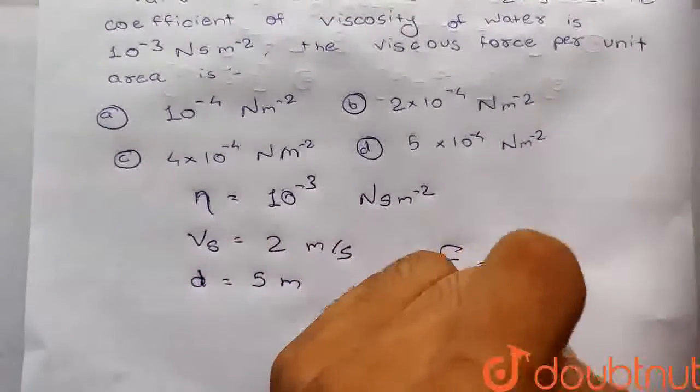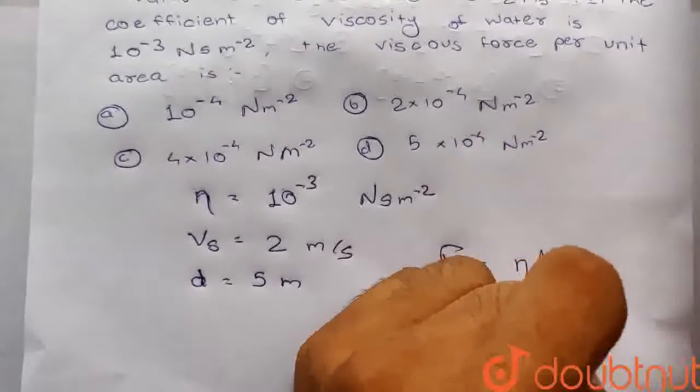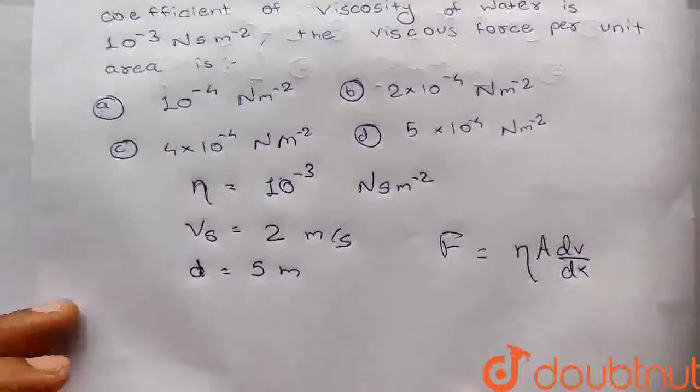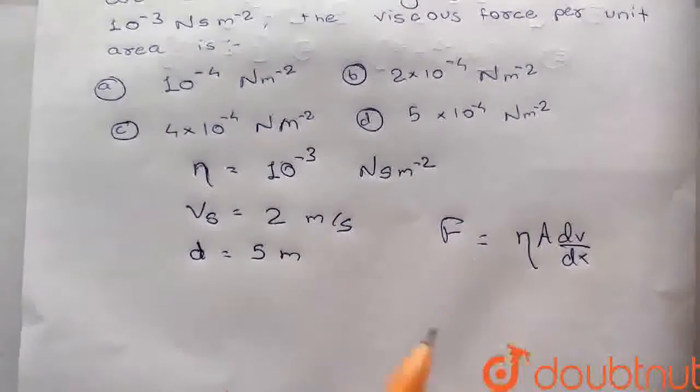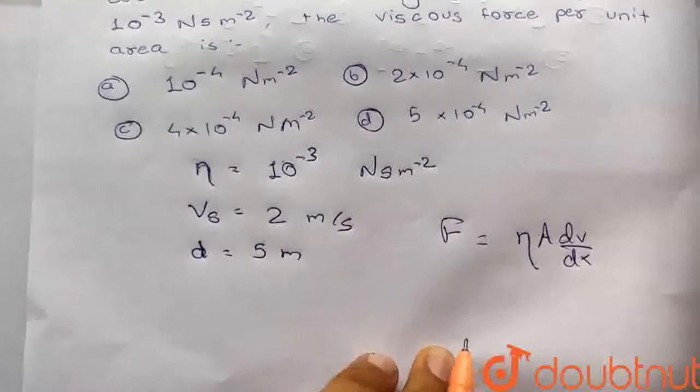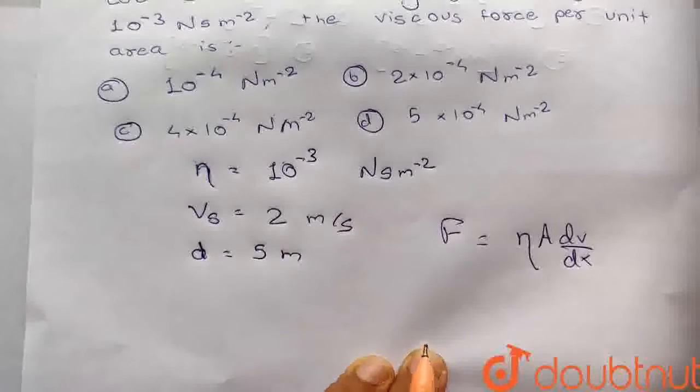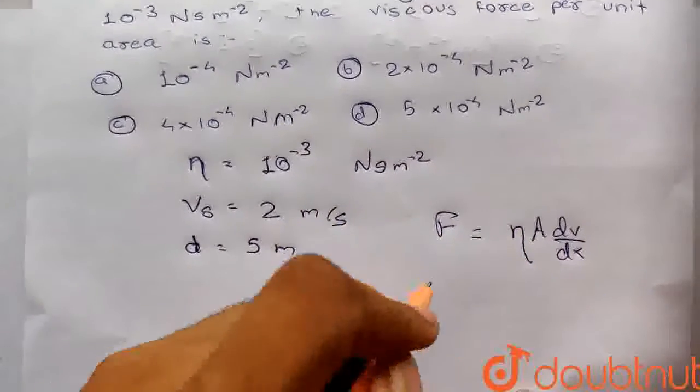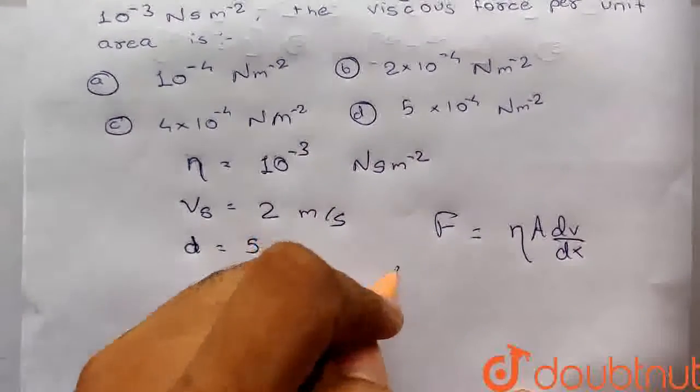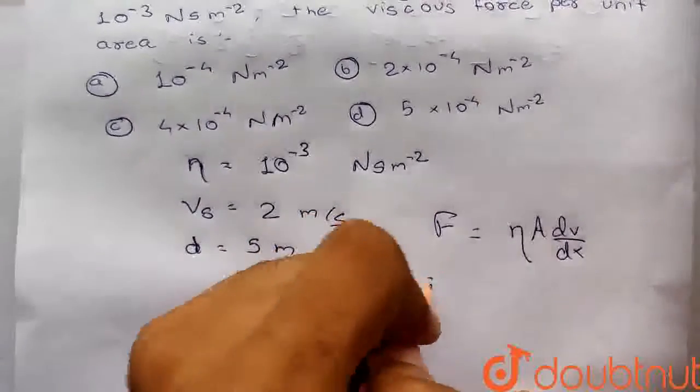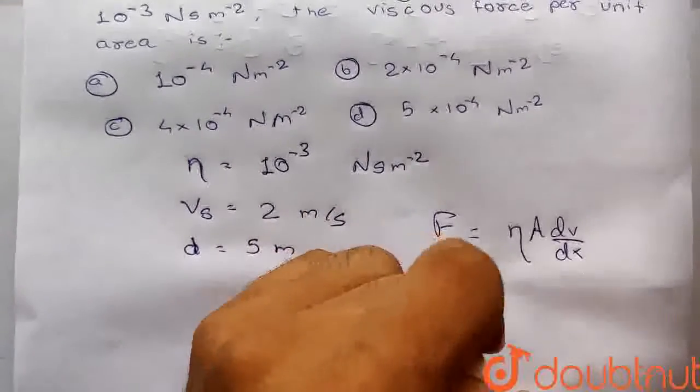This formula is eta A dV by dx. The minus sign represents that it is a resistive force - it will resist the motion. So F equals eta A dV by dx. In the question, we have force per unit area, so F by A will be eta into dV by dx.